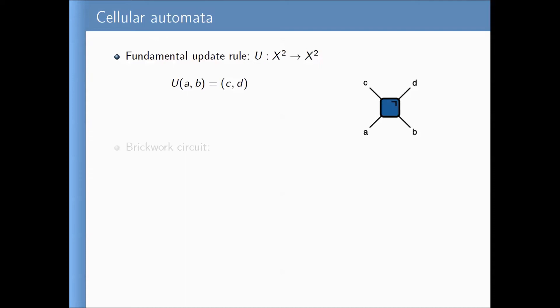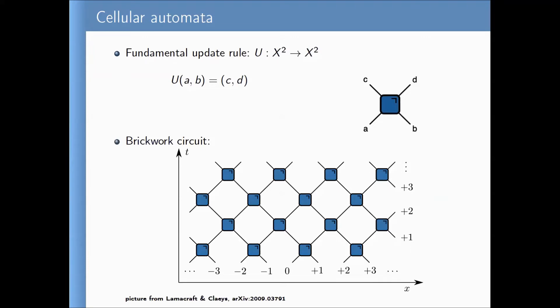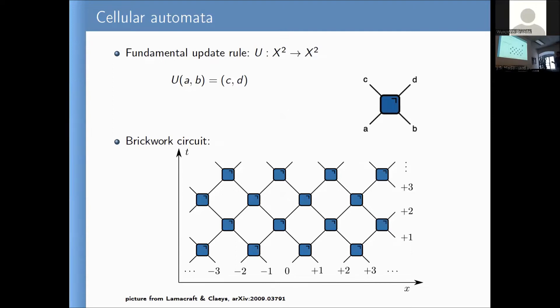This update rule acts on only two cells. However, I want an update rule acting on a larger system so that many cells get coupled and interact. For this purpose we use the so-called brickwork circuit construction. In this picture, horizontal direction is the x-axis, vertical direction is the t-axis, and time flows from bottom to top. Variables live on the lines, each taking values from the set x — numbers from one to n. Each box takes two incoming variables and gives two outgoing variables in a brickwork structure.